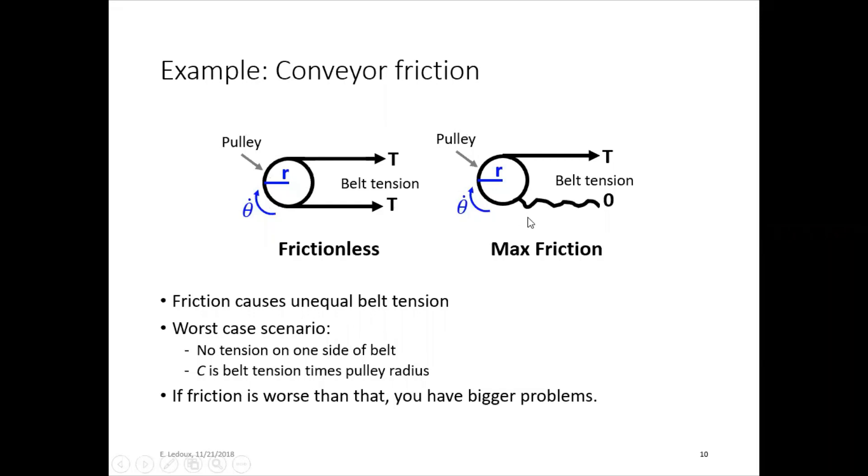Now for maximum friction, it's taut on the top and it is super slack on the bottom. So in that case, tension is not going to be equal and the friction is going to be force times distance to get torque.